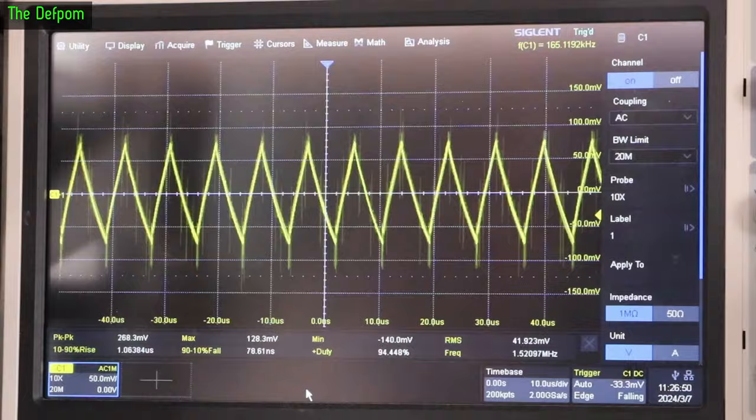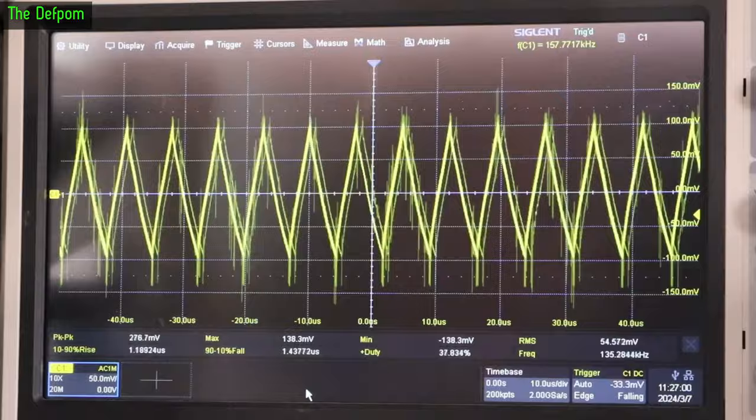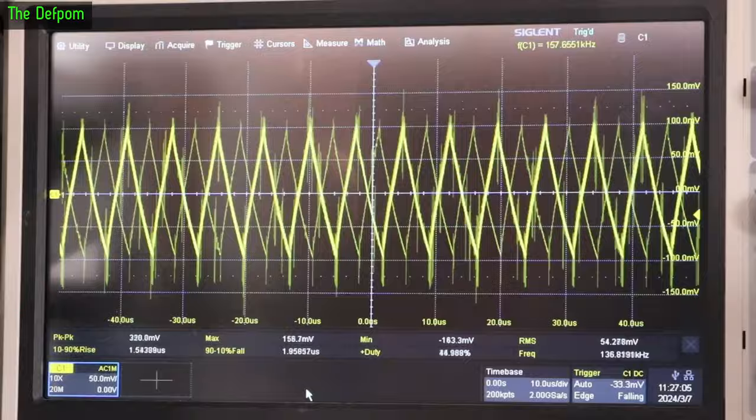And say, turn the load back off again. So let's just change the loading to let's go 2 amps. And turn it back on. About 300 millivolts peak to peak noise now. Okay.